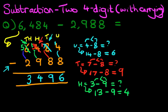And we have our answer. 6,484 minus 2,988 is 3,000. I'm just going to go back here so that I can go back to the same color. The answer is 3,496.